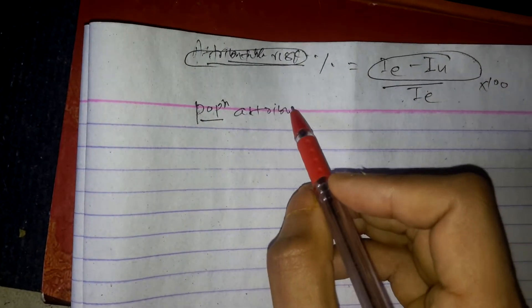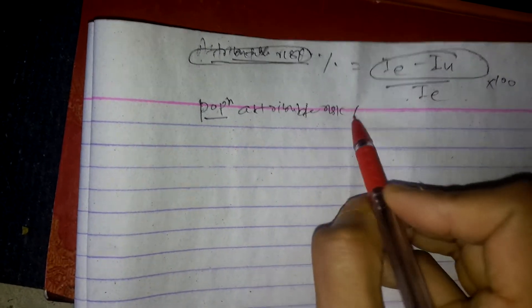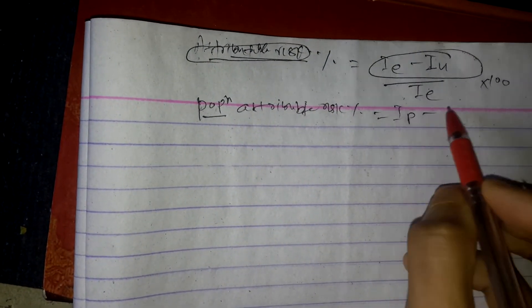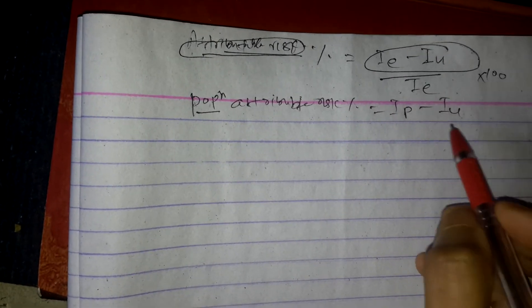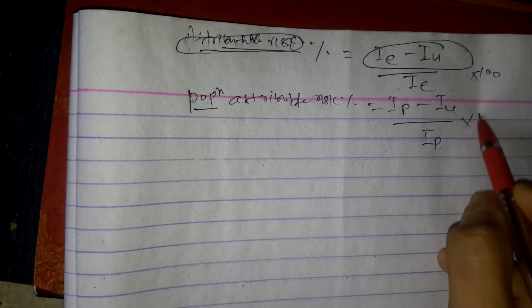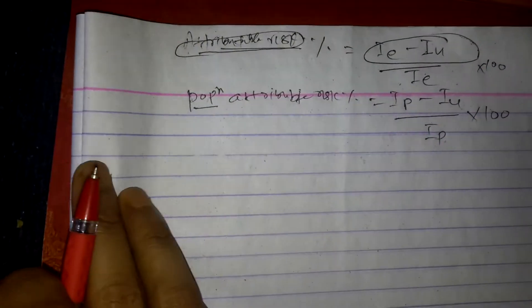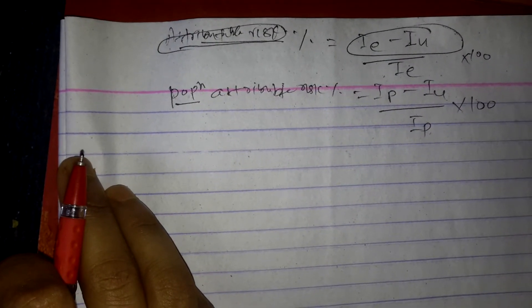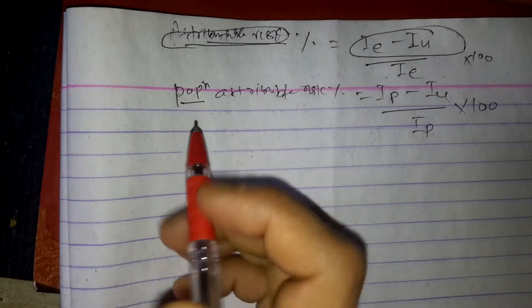Population attributable risk percentage is equal to incidence in the total population minus incidence in the unexposed, divided by incidence in the total population, multiplied by 100. Now let's discuss the meaning of the term 'attributable.'